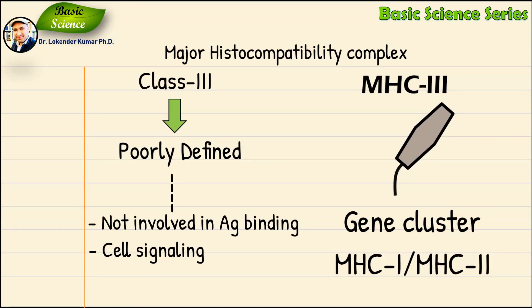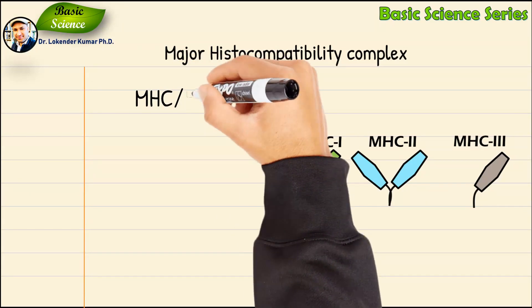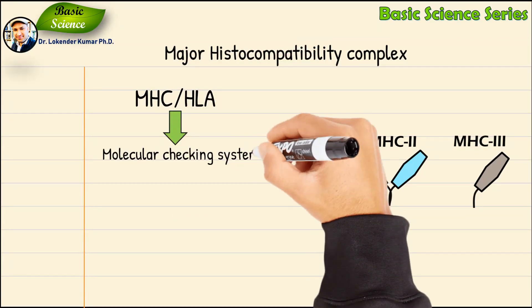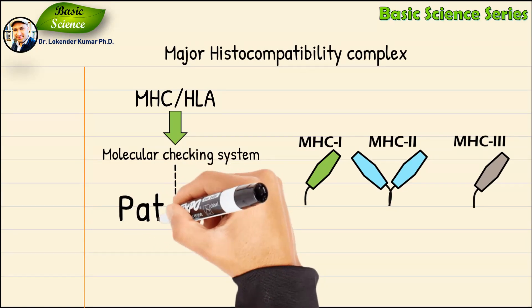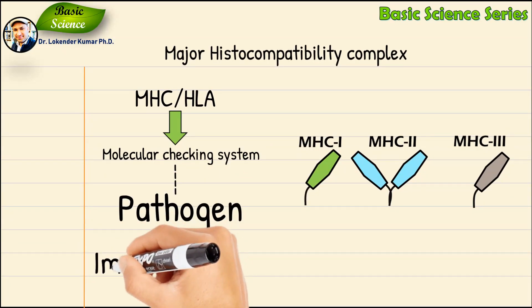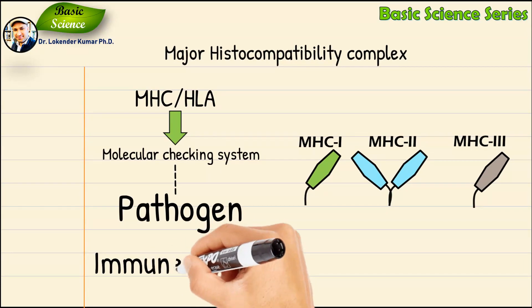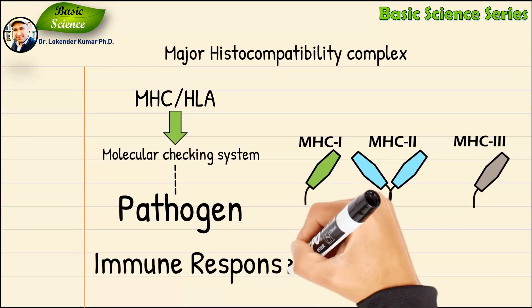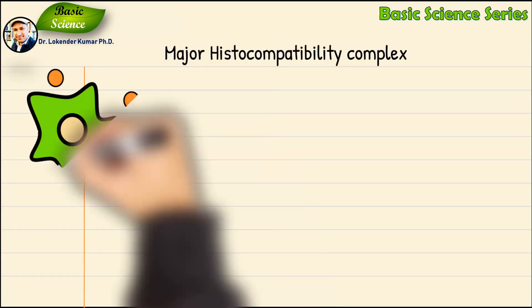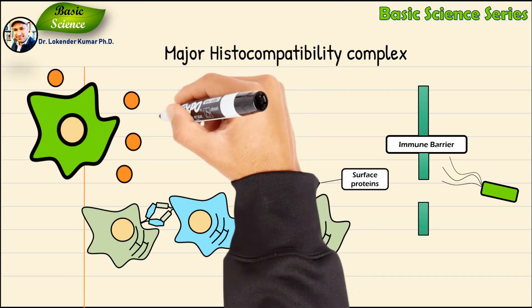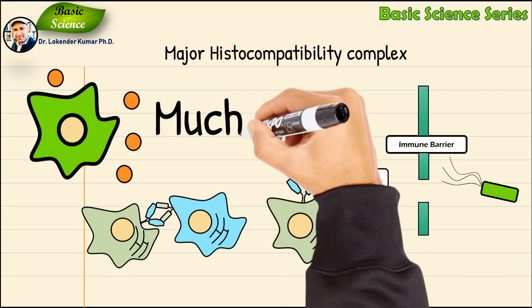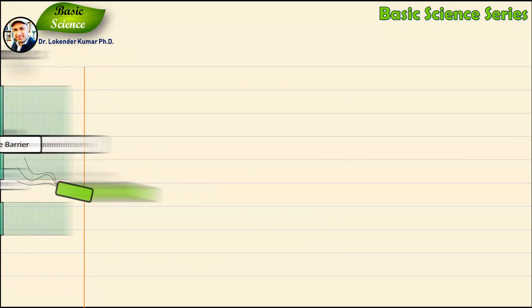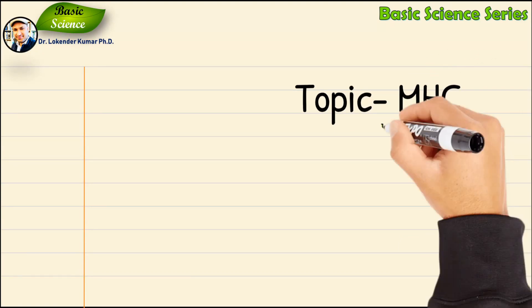In conclusion, MHC or HLA antigens play a very important role as a molecular checking system in our body to determine whether we have an intruder in our system. If there is one, it initiates a powerful immune response by activating immune cells against the intruder. In the next episode, I'll be covering exciting topics of the immune system, so please stay tuned and don't forget to subscribe to the YouTube channel.